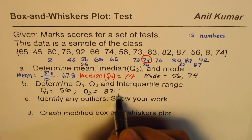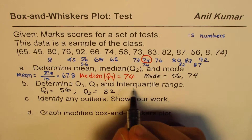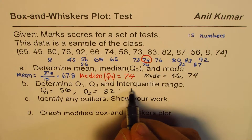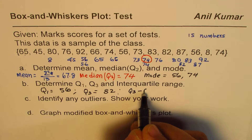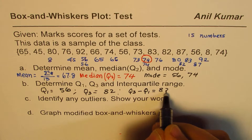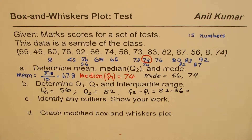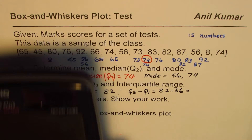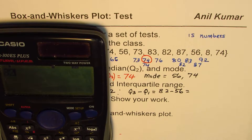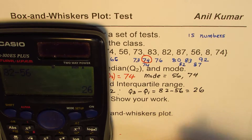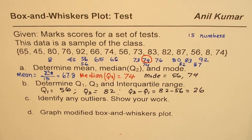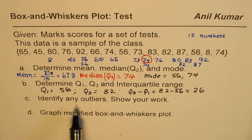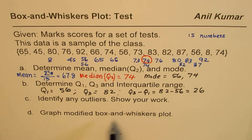The interquartile range (IQR) is Q3 minus Q1, which is 82 minus 56, equals 26. So the IQR is 26.